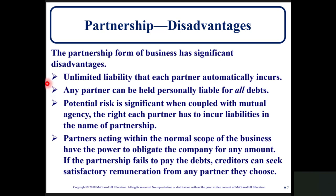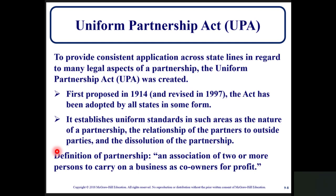Partnership disadvantages: the partnership form of business has significant disadvantages. Unlimited liability means each partner automatically incurs risk — any partner can be held personally liable for all debts. Potential risk is significant when coupled with mutual agency, the right each partner has to incur liabilities in the name of the partnership. Partners acting within the normal scope of the business have the power to obligate the company for any amount. If the partnership fails to pay the debt, creditors can seek remuneration from any partner they choose. The major disadvantage is unlimited personal liability — all assets can be taken.